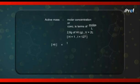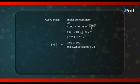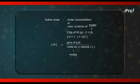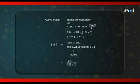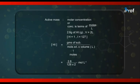Active mass is nothing but molar concentration — that is, number of moles per liter. The formula becomes: grams of substance divided by its molecular weight, divided by volume in liters. Grams divided by molecular weight gives number of moles. Using the data given: we have 2.8 grams of HI, its molecular weight is 1 plus 127 equals 128, and the volume is 2 liters. So the active mass of HI equals 2.8 divided by 128, divided by 2 — that gives its active mass in moles per liter.